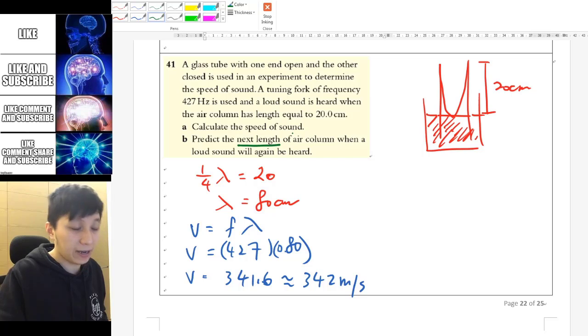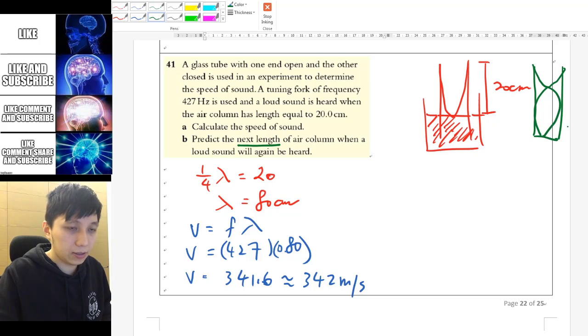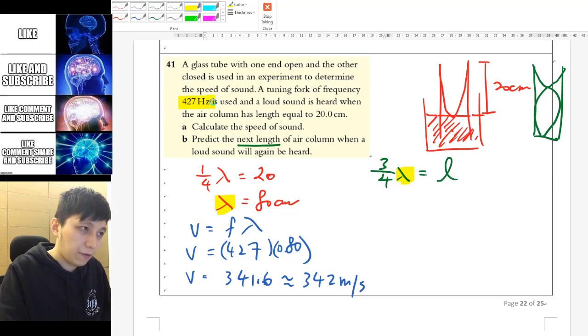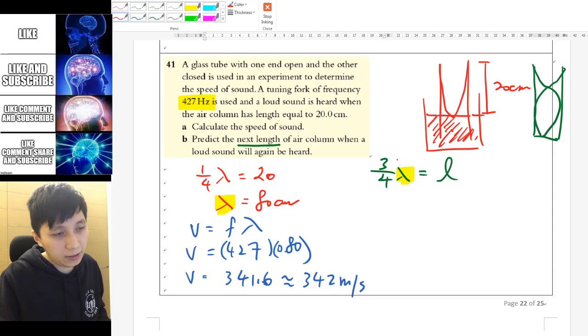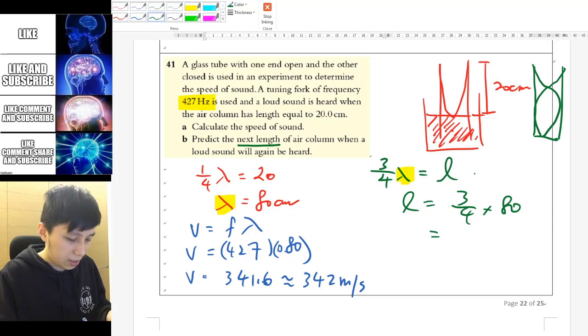Part B is asking you the next length. I assume it's total length of the air column when the next resonance is heard again. So that should be the second harmonic. And I recommend you to draw it out. So how it should look like should be something like this. So you can again try to count how many lambda are there. And that should be 3 over 4 lambda equal to the new length. So I'll call it L. Do remember that in this question, the lambda is going to be the same because the frequency is going to be the same. They didn't say you have to change it. And also the speed of sound is going to be the same because it's the same medium, the same air. And so in this case, then you will be able to find L directly, which is simply 3 over 4 times 80 cm. And that should get you 60 cm. And that is the length for the air column.